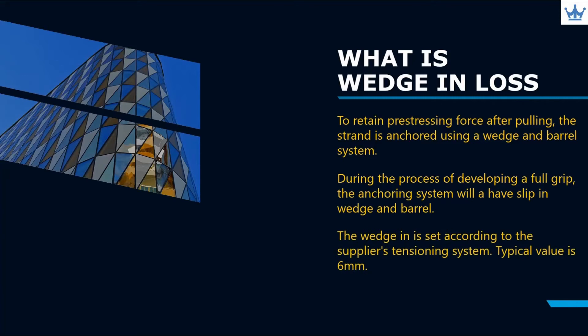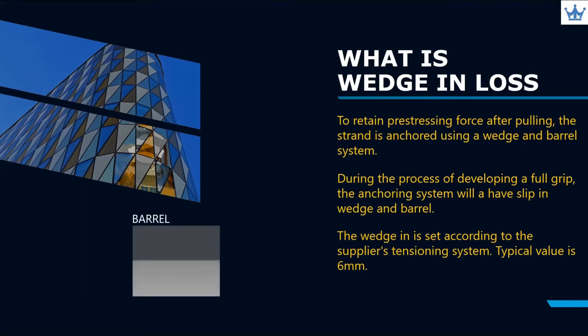The wedge-in is set according to the supplier's tensioning system. Typically, the value is set to 6 mm in design. You can see here that during the removal of pulling force, the wedge along with the strand is locked tightly against the barrel.